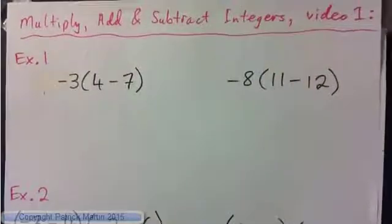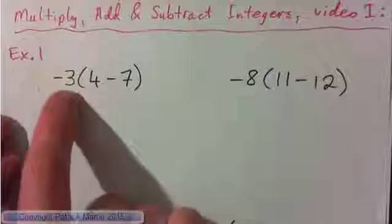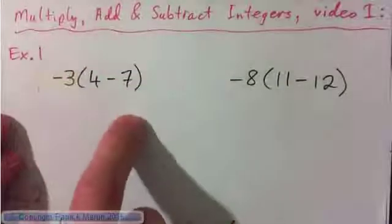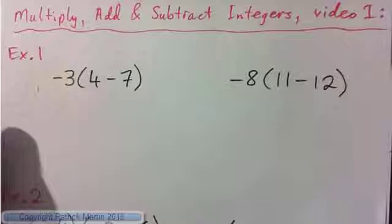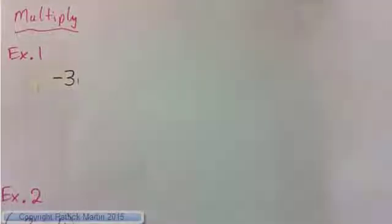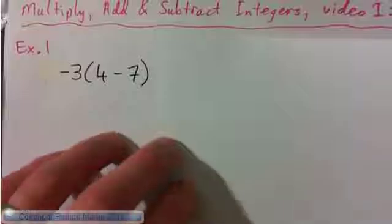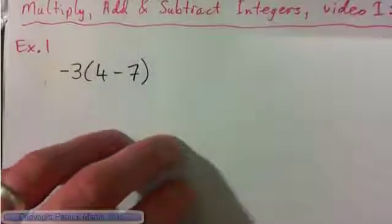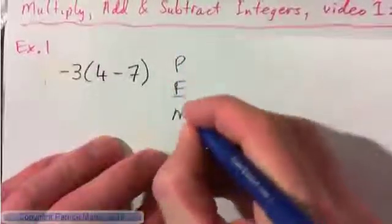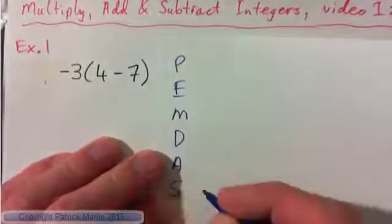So, we have negative three, parenthesis, four minus seven. With the order of operations — PEMDAS — just write it down on the side of your page. PEMDAS: parenthesis, exponents, multiply, divide, add, then subtract.